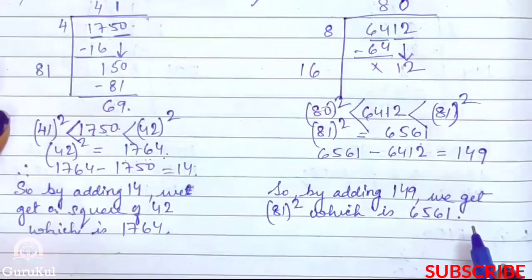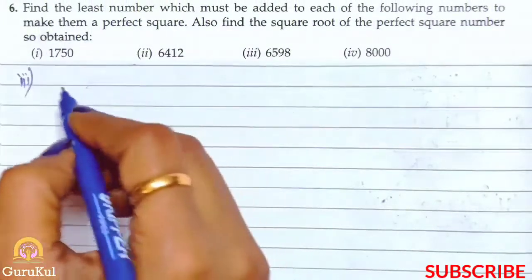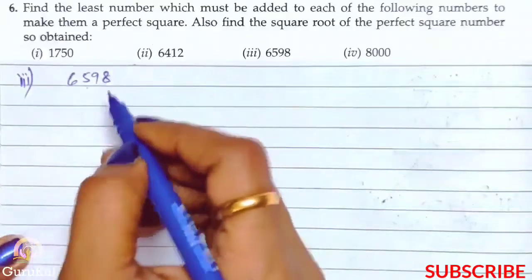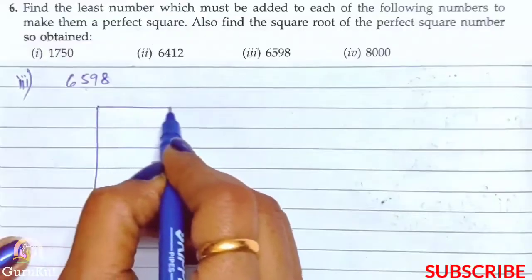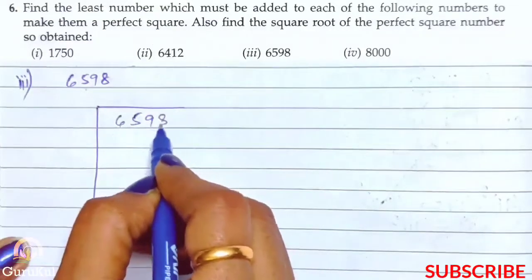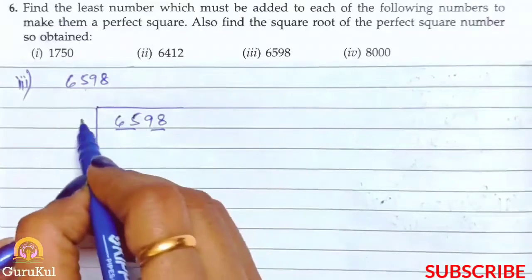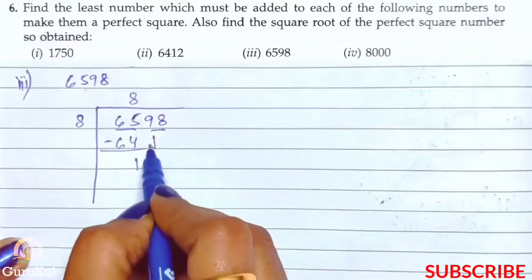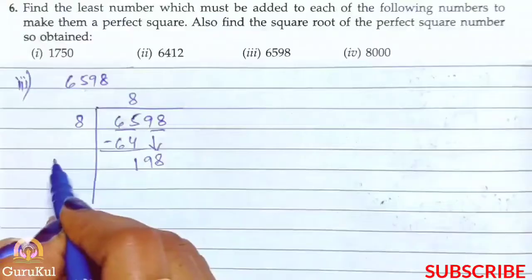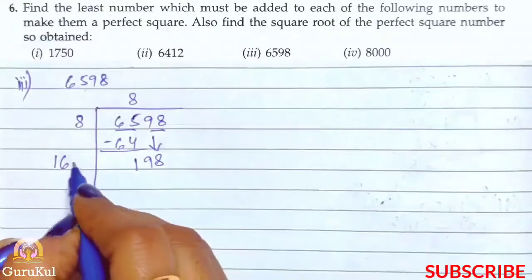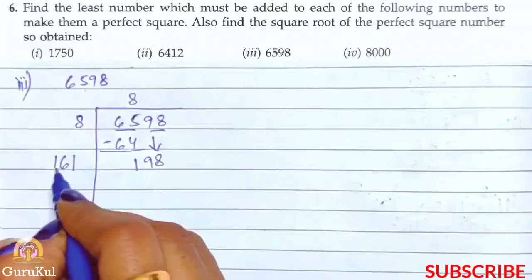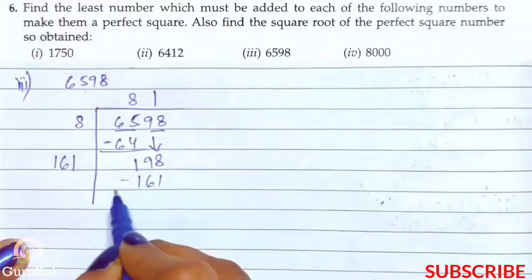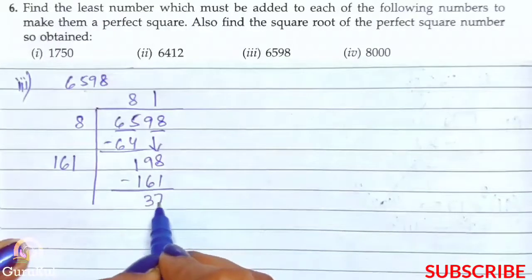Now the third part of question number 6, the sum is 6598. So let us begin. 6598, we have paired them. 8 eights are 64, we get the remainder 1. We will bring down 98. Yaha 8 ka double hogaya 16. Now 161, 161 into 1 gives us 161 and remainder is 37.